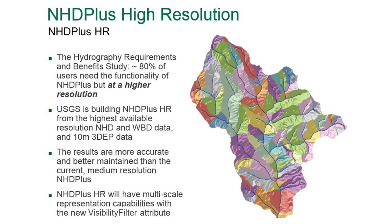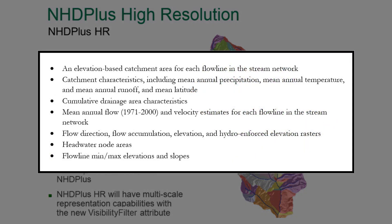NHD Plus HR also has multi-scale representation capabilities with the new visibility filter attribute. This simplifies maintenance by limiting the number of hydrography layers that need to be maintained. NHD Plus HR consists of vector and raster data layers. It includes a snapshot of NHD and WBD at the time the NHD Plus HR was built, as well as the following components.